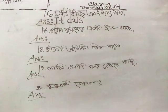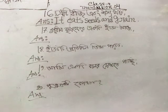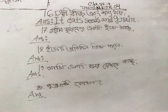So we can write: it eats seeds and grain. Now the answer for number 16 is: it eats seeds and grain. We write 'sheets and grain' — so the final answer is: it eats seeds and grain.